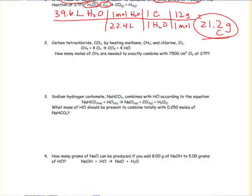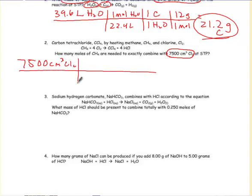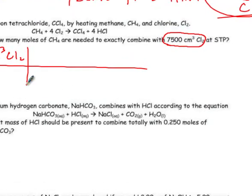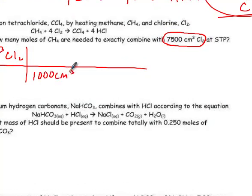All right, next one. Find the number, the unit, and what it's of. Once again, 7500 centimeters cubed of chlorine. All right, so I need moles. It's a gas at STP. So I know I need liters. There are 1,000 centimeters cubed in a liter. Because it's the same as milliliters, so 1,000 of them. 22.4 liters in one mole of Cl₂.